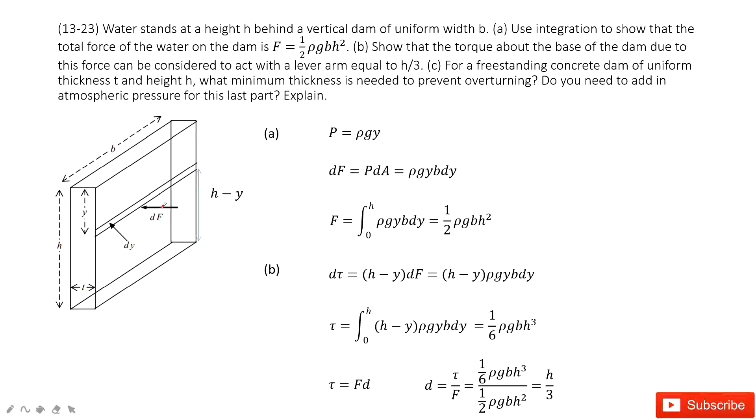First thing we need to find is the pressure on this small fraction times A. For A, it's easy. You can say this length is dy, this length is b, so it's dy times b.